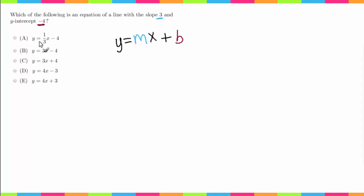Now going through our answer choices, answer choice A has a slope of one-third, so we know that's not it. Let's go ahead and cross that out. Answer choice B has a slope of 3 and a y-intercept of negative 4, so this here is going to be our answer choice.